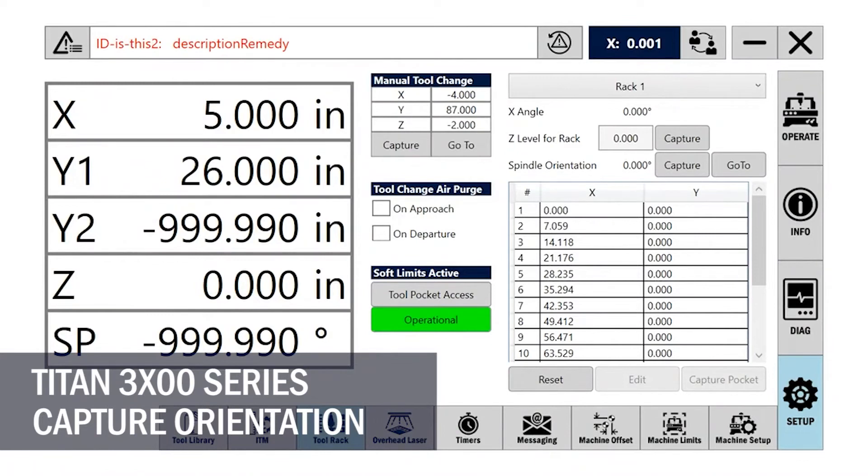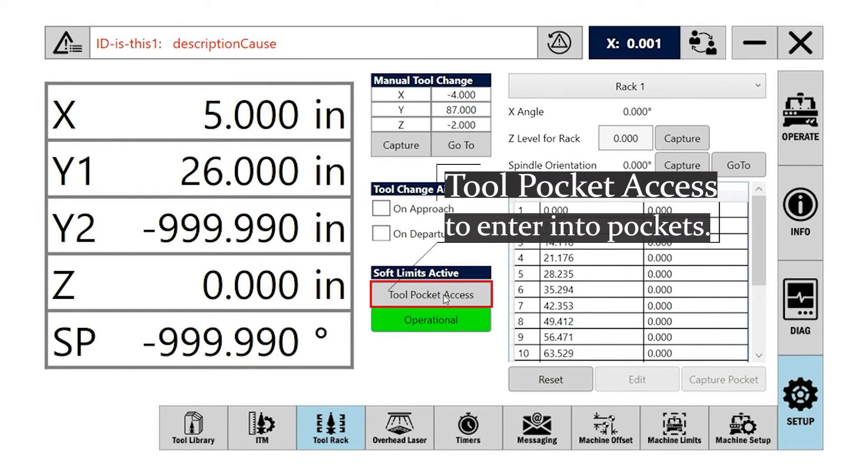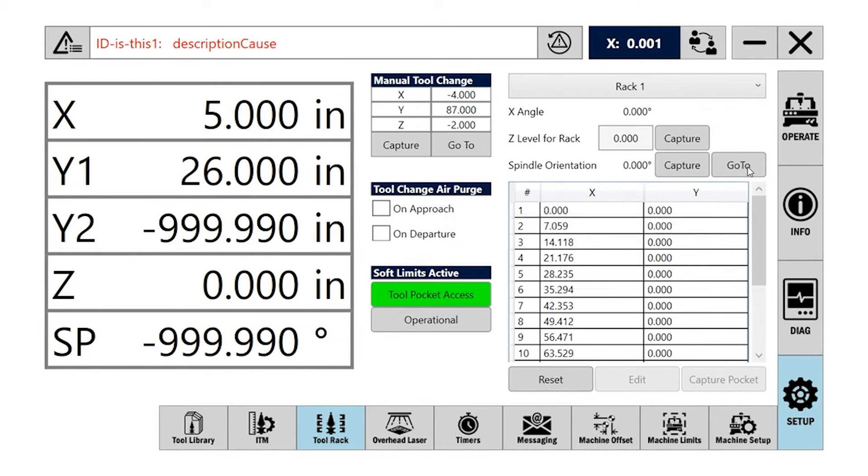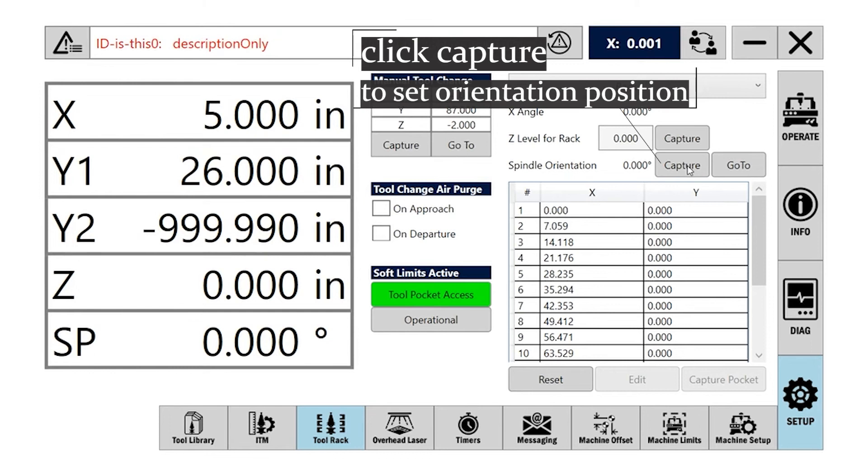On a Titan 3000 series, here's the steps for doing the spindle orientation. To open up tool pocket access, click on Tool Pocket Access. That'll turn green. That'll allow you to go into tool pockets. Click on Go To to say your spindle orientation. And then once you're in the pocket, click on Capture to capture orientation.